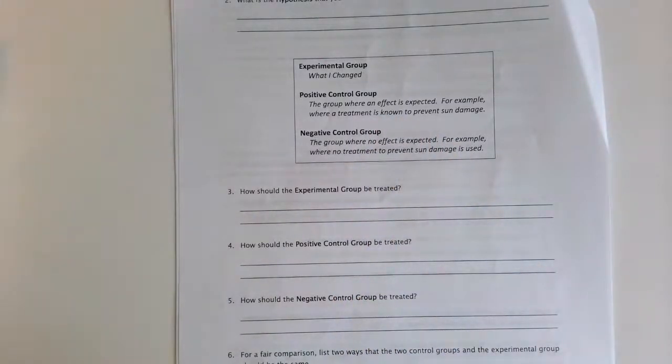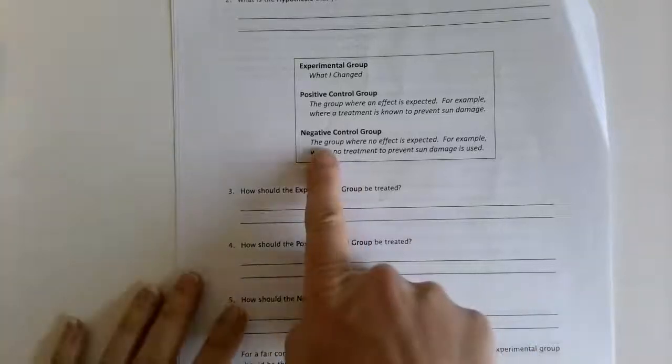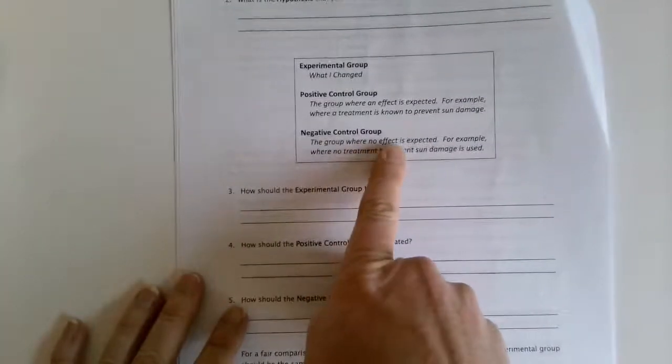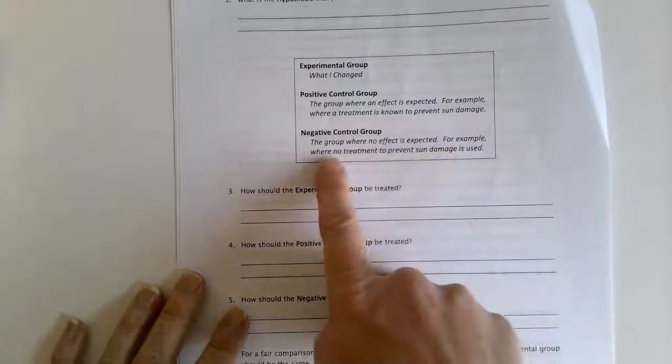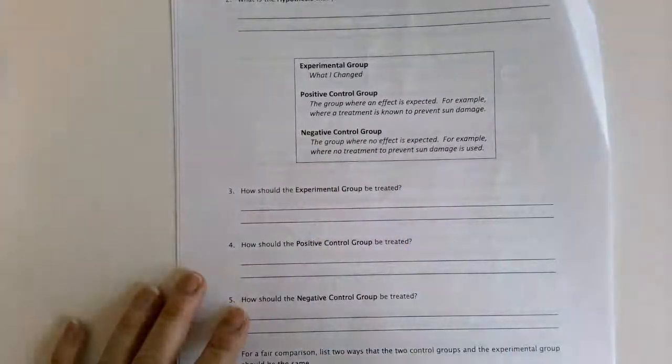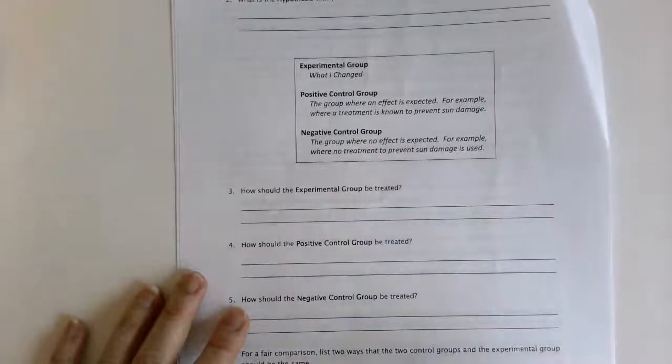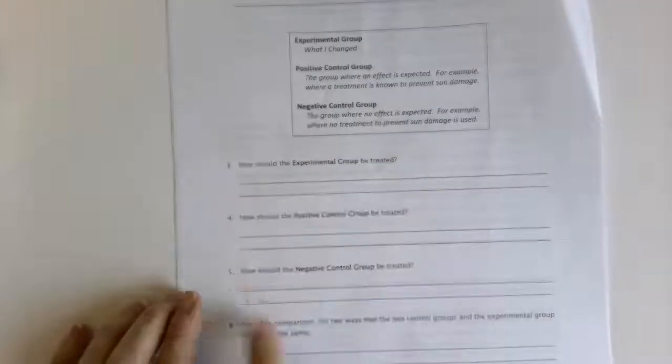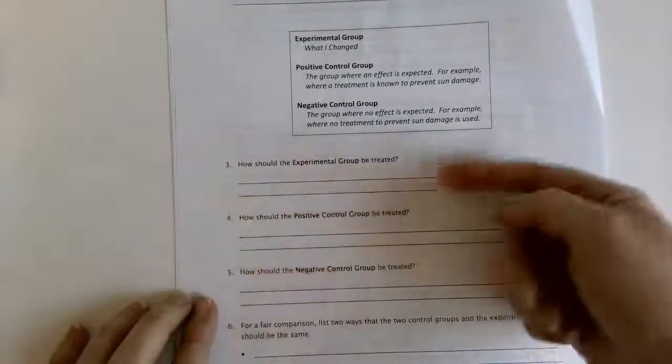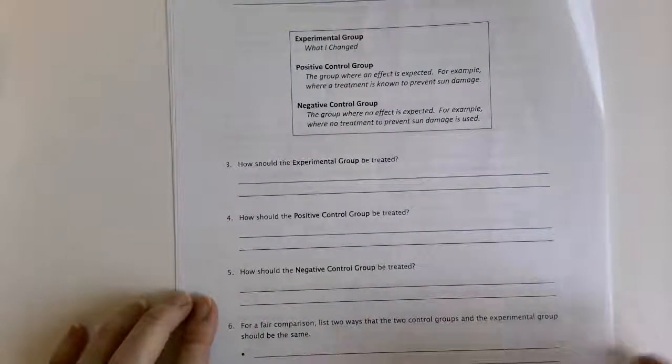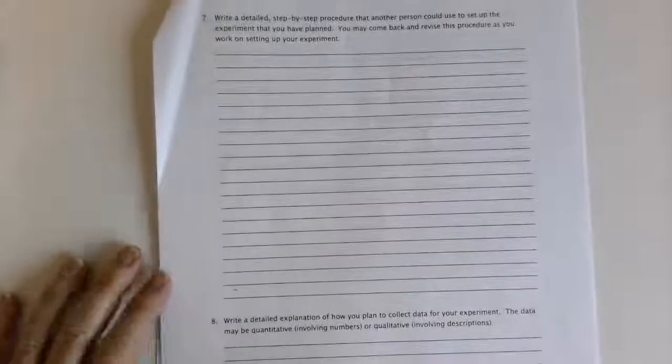For example, where treatment is known to prevent sun damage, so this is like the one that's maybe going to have a cloth on it. And then the group where no effect is expected, for example where no treatment to prevent sun is done. So in other words, the negative control group is going to be the group that you maybe, if you were putting sunblock on, that you didn't put any sunblock on. So here you're going to write all of that up, and you're going to compare all of it on the back.